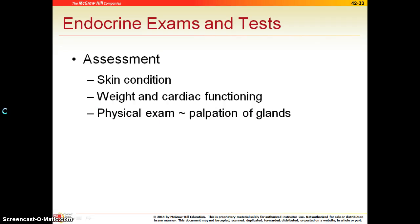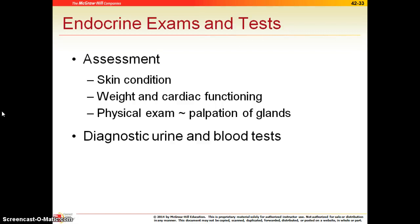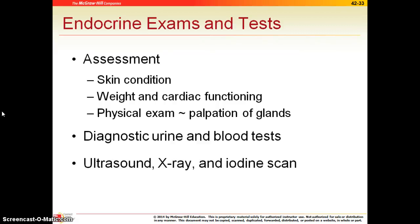For the endocrine system, they often look at your skin condition, take your weight and cardiac function, and may palpate or touch the glands to see if they're enlarged. The easiest way to tell if there's a problem — with diabetes or thyroid problems — is to take a urine sample or a venipuncture to send blood to the lab. For some of these organs you can also do ultrasound, x-rays, or an iodine scan, where they inject iodine which shows up bright on an x-ray.